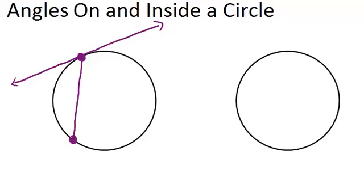And in this situation, we have two things. We have an angle right here and an arc that is intercepted by the chord and the tangent line.